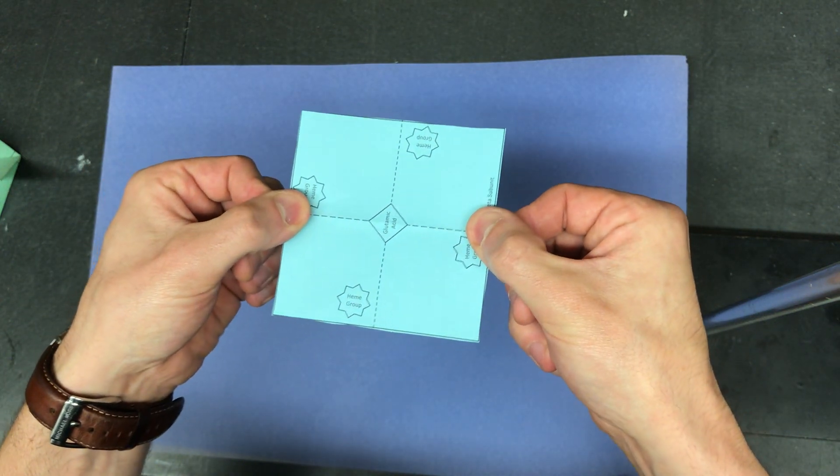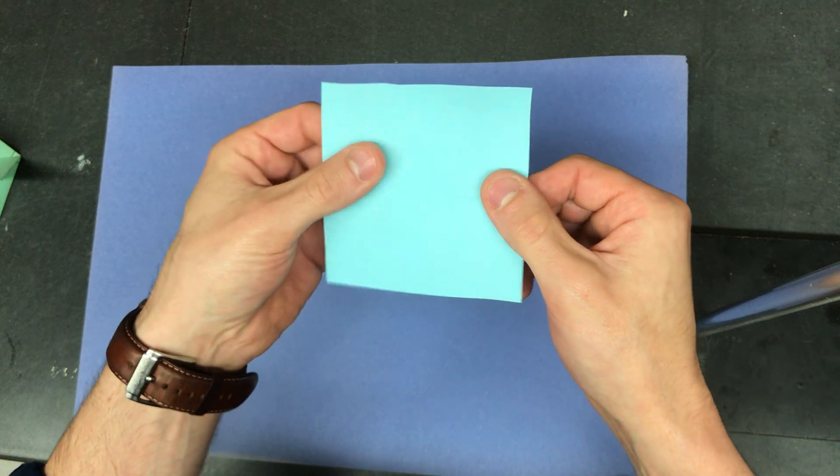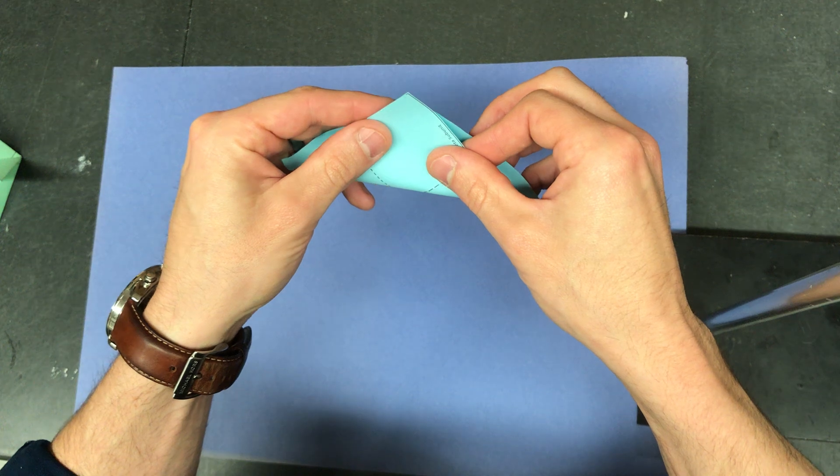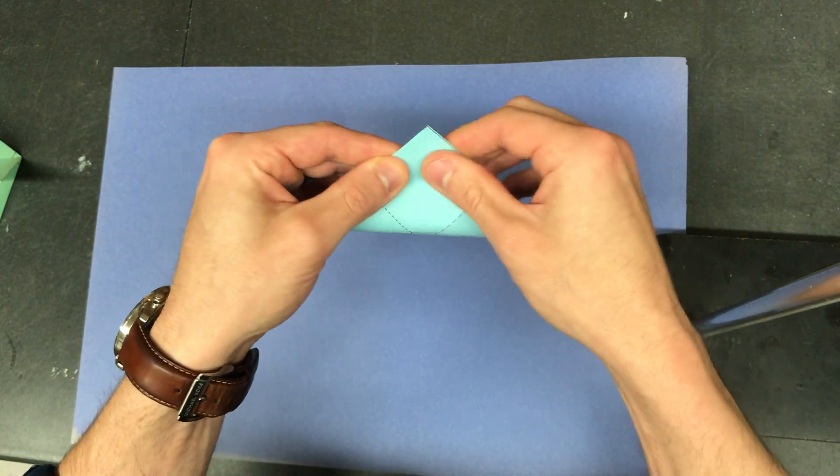Cut out the square, then flip it over so that you don't see any image on it. You're going to fold it into a triangle in half.